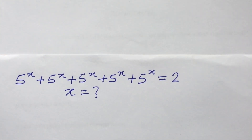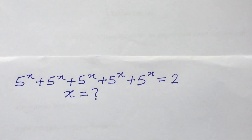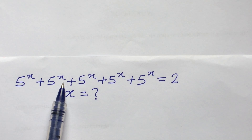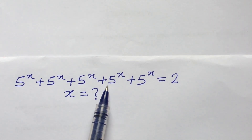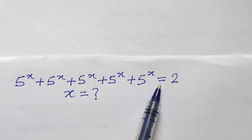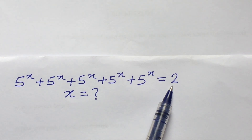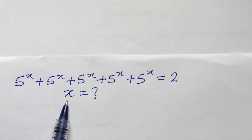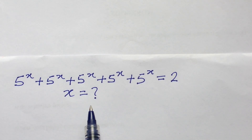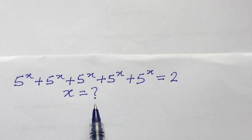Welcome everyone to my channel. Today we have a nice exponential math problem. The question reads: 5 to the power of x, plus 5 to the power of x, plus 5 to the power of x, plus 5 to the power of x, plus 5 to the power of x, equal to 2. What would be the possible value of x?